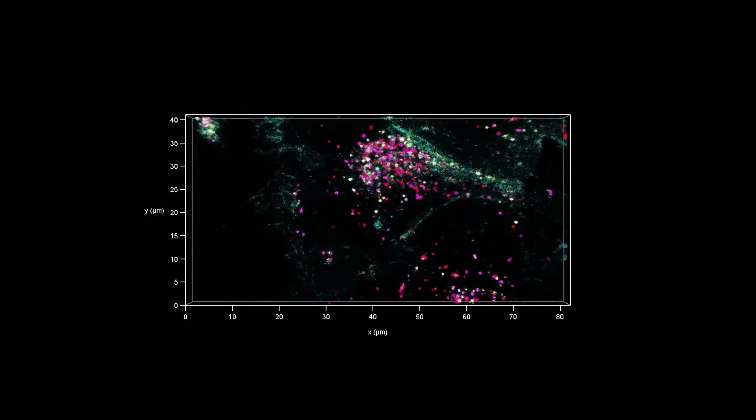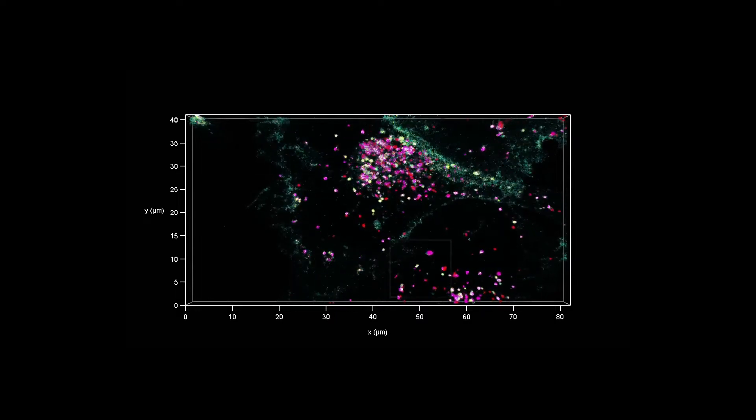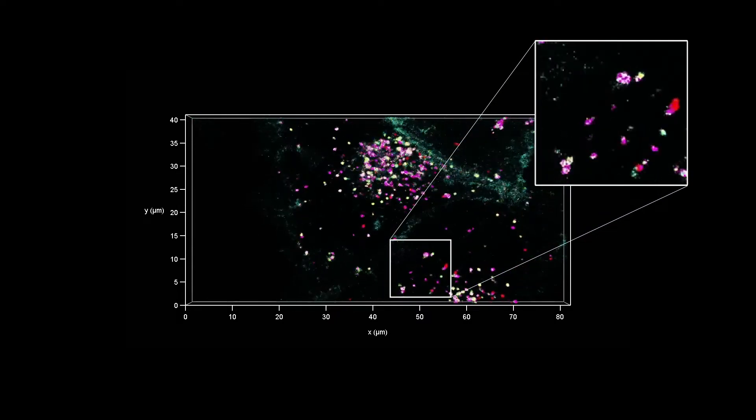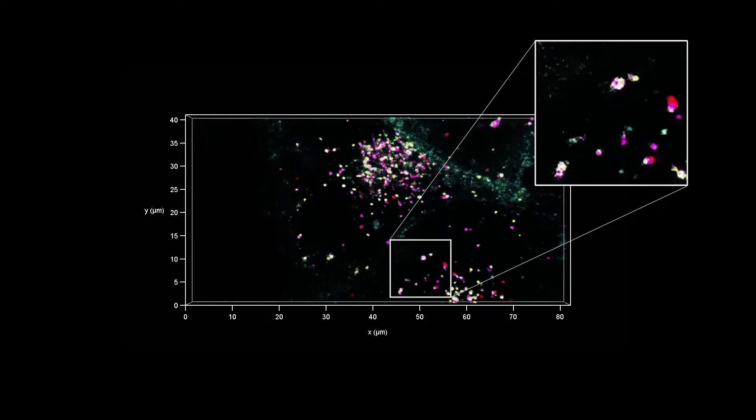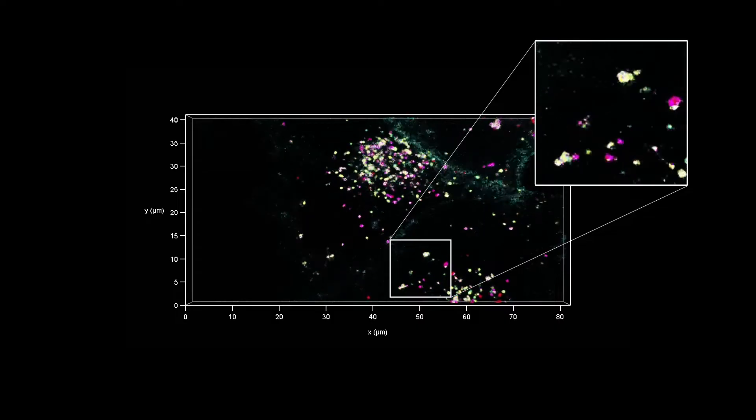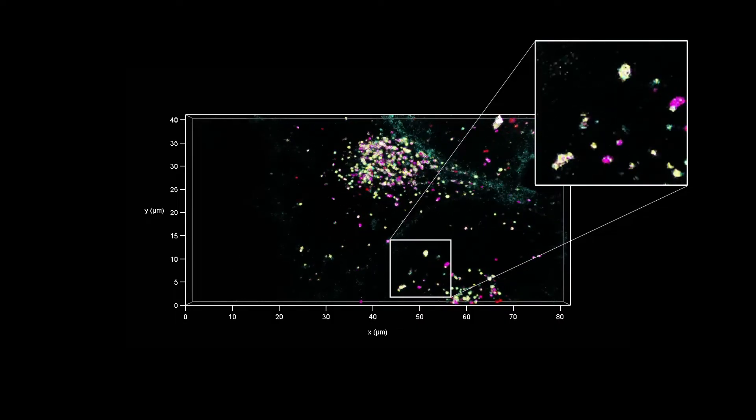This is where the new features of Stellaris come in. With TauSense, you can capture lifetime-based information. And we want to do that because with lifetime, we can sense environmental changes. And that can give us access to functional information.